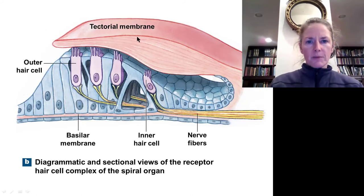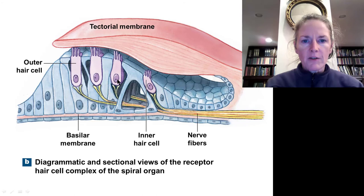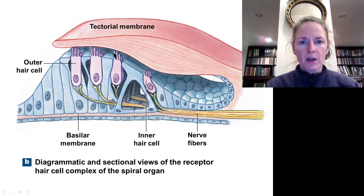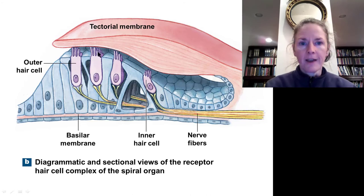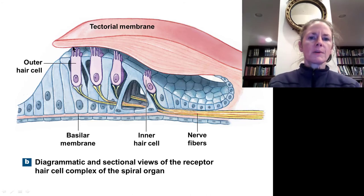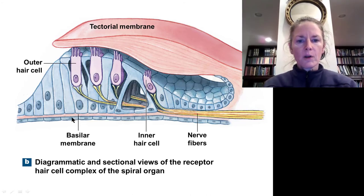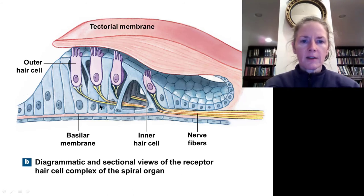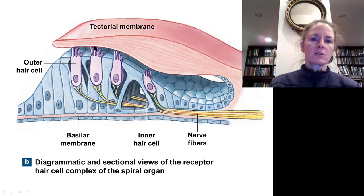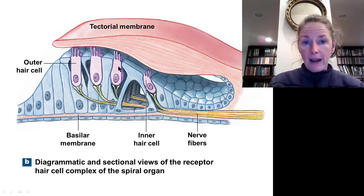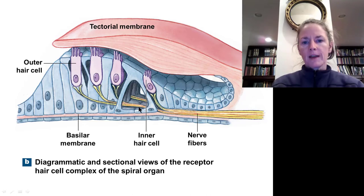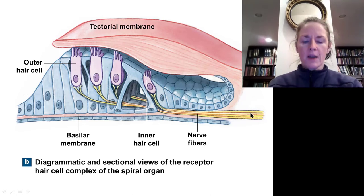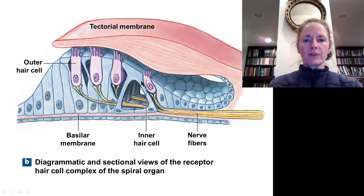Here is a picture of the tectorial membrane with the hair cells beneath it and their specialized microvilli — the hairs — stuck up into the tectorial membrane. When the basilar membrane vibrates, it shakes the cells, displacing the hairs, which causes neurotransmitter release and transduction of the signal along the monitoring nerves.